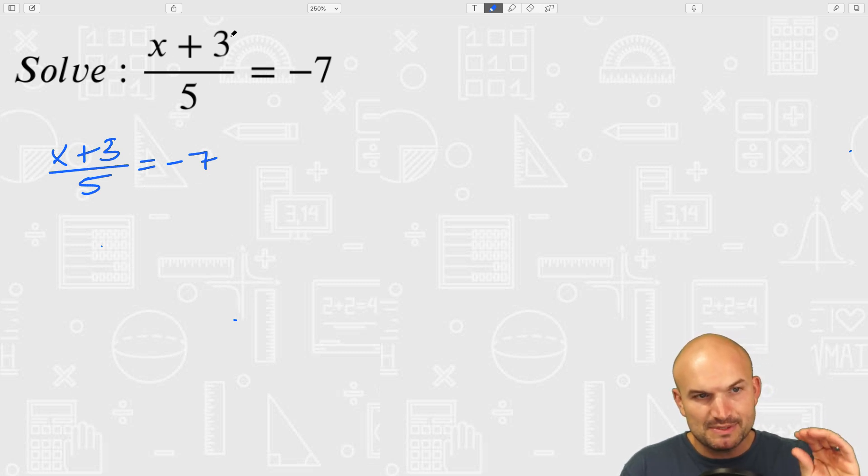In this problem we have x plus 3 divided by 5. Now what this really means is this 5 is dividing into the x as well as into the 3. So there's really distributive property going on for division. We can also write this as x divided by 5 plus 3 divided by 5 equals negative 7.